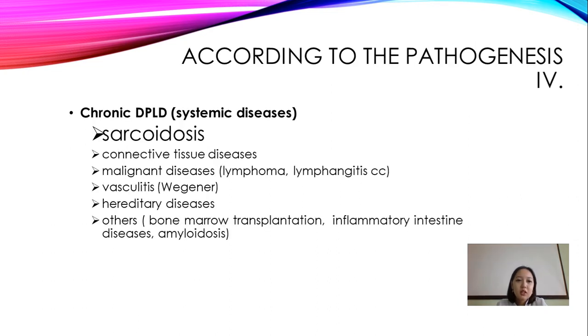Under chronic systemic diseases you see sarcoidosis, connective tissue diseases, malignant diseases, vasculitis, hereditary diseases, and others.